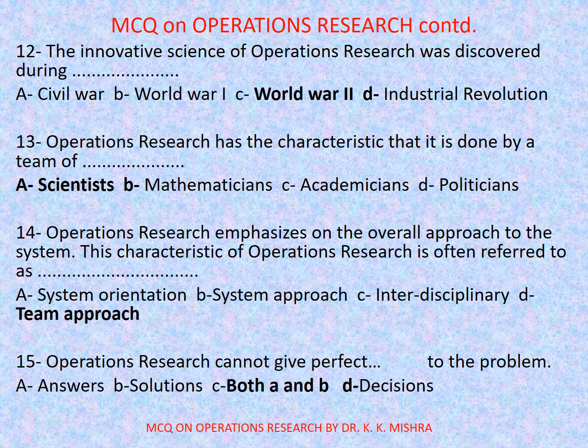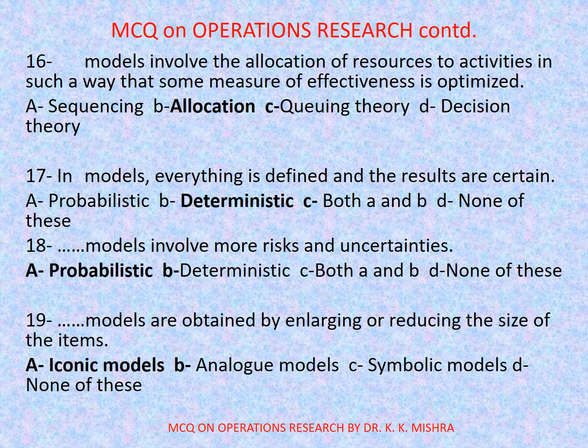Correct option is D: Team approach. Question number 15: Operations research cannot give perfect dash to the problem — options are: A. Answers, B. Solutions, C. Both A and B, D. Decisions. Correct option is C: Both A and B. Question number 16: Dash models involve the allocation of resources to activities in such a way that some measure of effectiveness is optimized — options are: A. Sequencing, B. Allocation, C. Queuing theory, D. Decision theory. Correct option is B: Allocation.